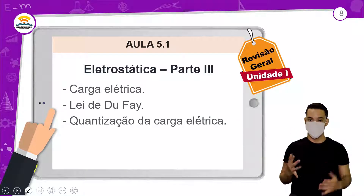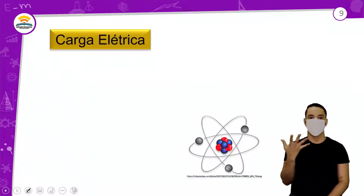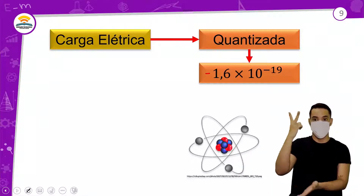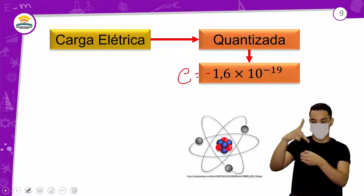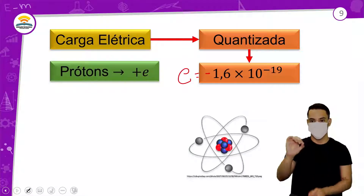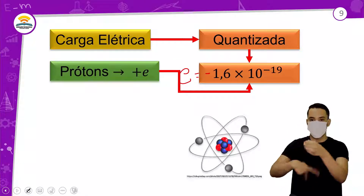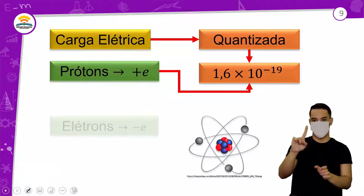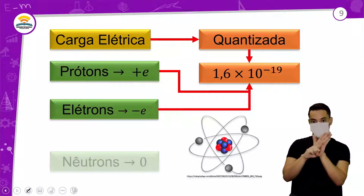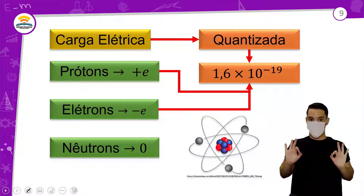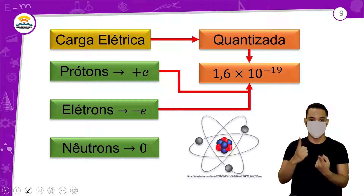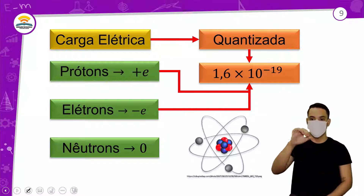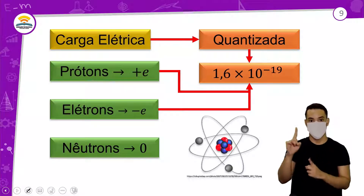Agora vamos falar de carga elétrica, lei de Dufay e quantização da carga. A carga de um elétron é quantizada. Se for elétron é negativo, se for próton é positivo: 1,6 × 10⁻¹⁹ coulombs. O elétron é negativo e o próton é positivo. O nêutron é neutro — na realidade ele tem quarks dentro, mas se cancela.